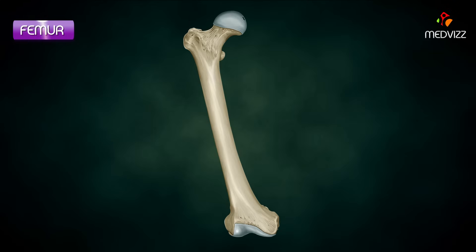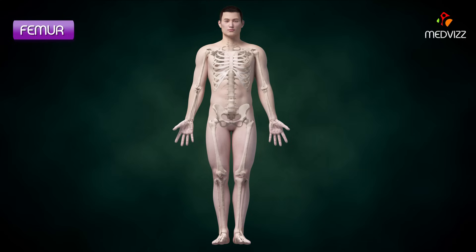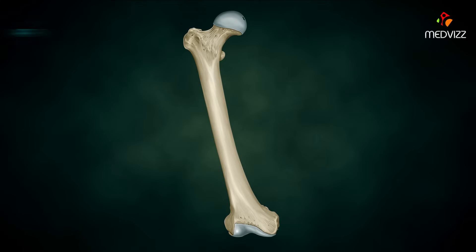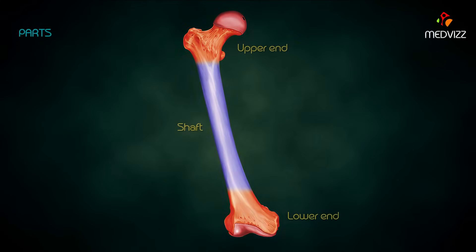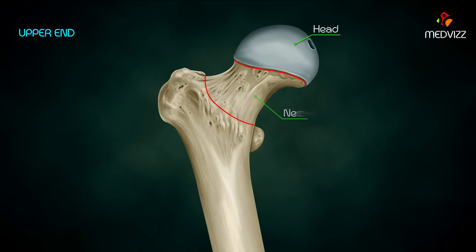The femur is the longest and strongest bone in the human body. It is a long bone situated in the thigh region. Its parts include the upper end, shaft, and lower end. The upper end has a head, neck, greater trochanter, and lesser trochanter.